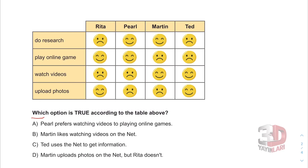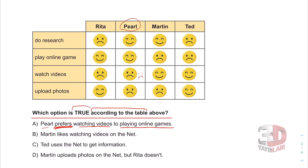Which option is true according to the table? Option A: Pearl prefers watching videos to playing online games. Let's see — Pearl: watching videos has a sad face, playing online games has a happy face. So she does not prefer watching videos; she prefers playing online games. This is not true.